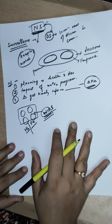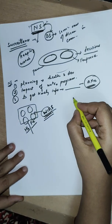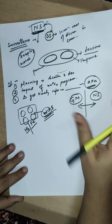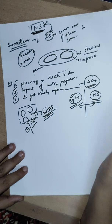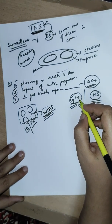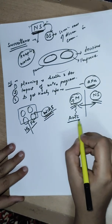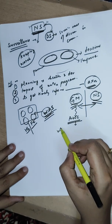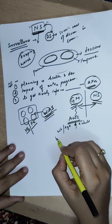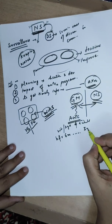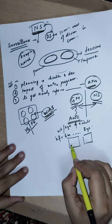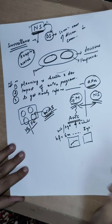People confuse two terms: growth monitoring and nutritional surveillance. These are totally two different entities. As we know, growth monitoring is one of the important components at the Anganwadi center, wherein we plot the weight-for-age of a child from birth or before six months of age till three years of age — we plot the growth of the child using WHO weight charts, plotting monthly growth and checking the curve.